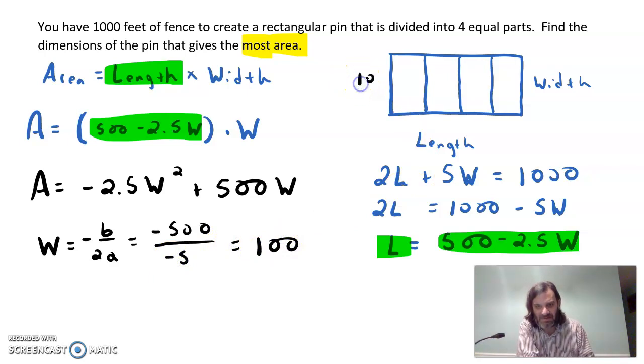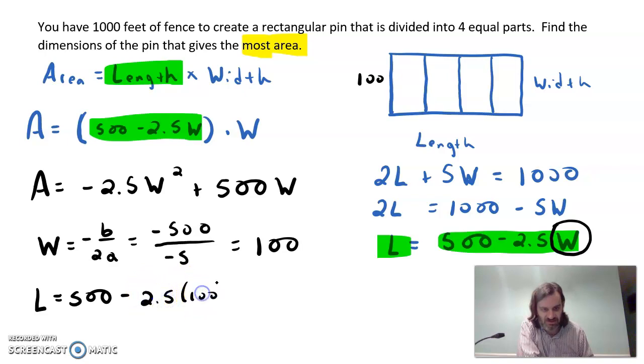So the width is 100. So if I come back and I use that number, the W, way over here in the length formula, I can say that the length is 500 minus 2.5 times 100. And I believe that gives me 250. So the length is 250.